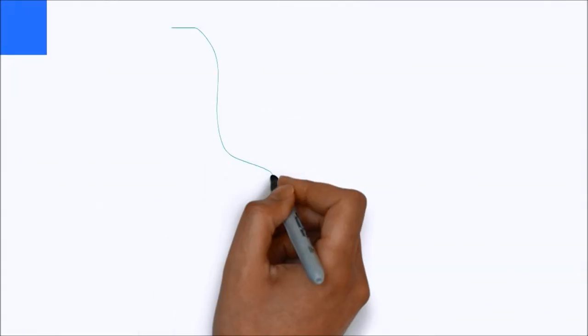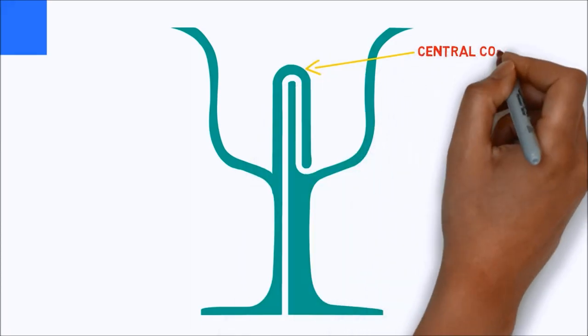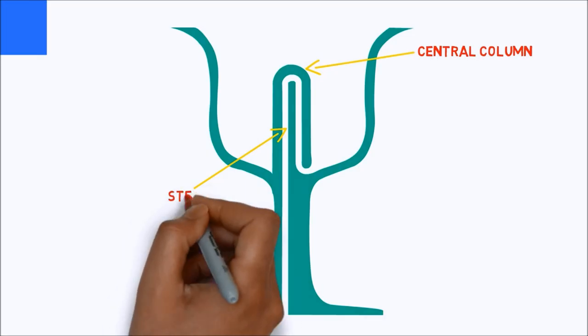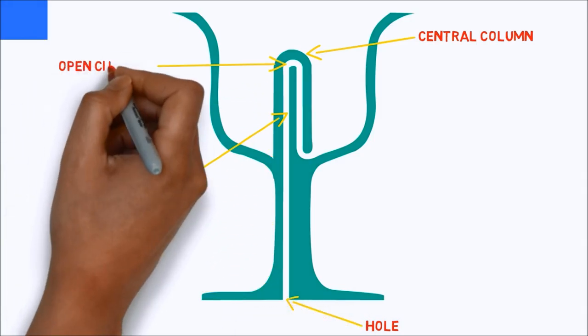A Pythagoras cup looks like a normal drinking cup, except that the bowl has a central column in it. The central column of the bowl is positioned directly over the stem of the cup and over the hole at the bottom of the stem. A small open pipe runs from this hole almost to the top of the central column, where there is an open chamber.